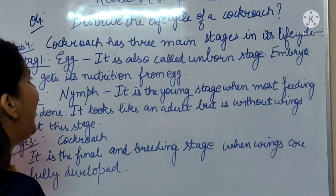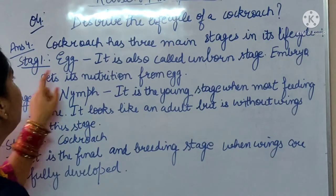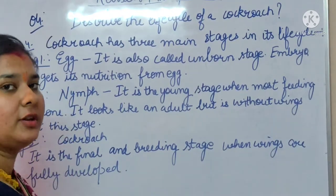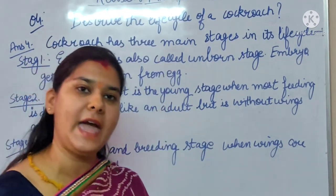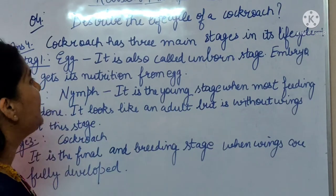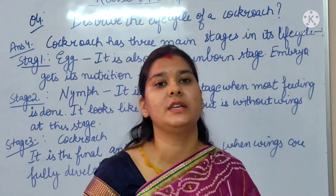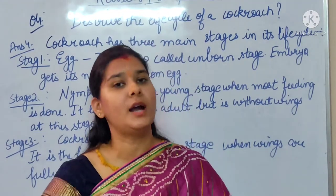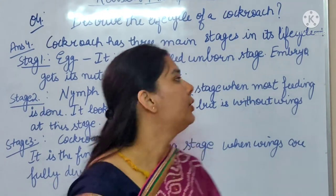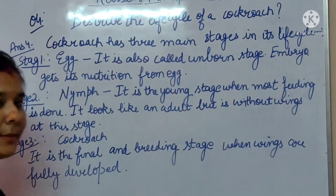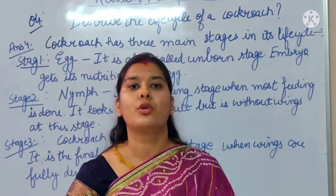The cockroach has 3 main stages in its life cycle. The first stage is egg. Egg is the first stage — it is also called the unborn stage, because the baby is not yet out; the baby is still inside the egg. Embryo gets its nutrition from the egg. We all know that the embryo is the part of the egg where the baby grows. The embryo changes into a baby.